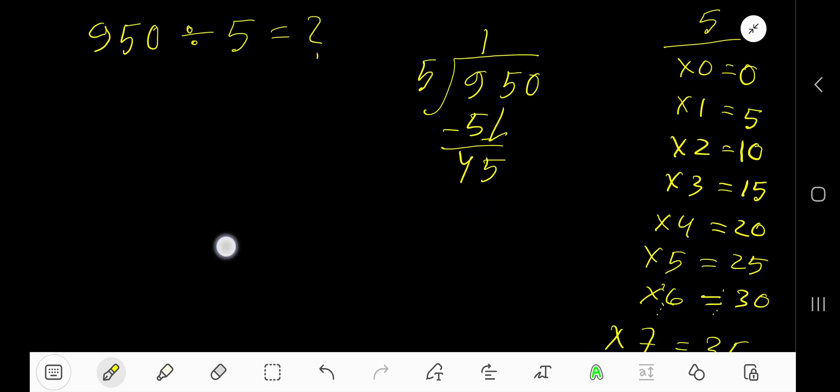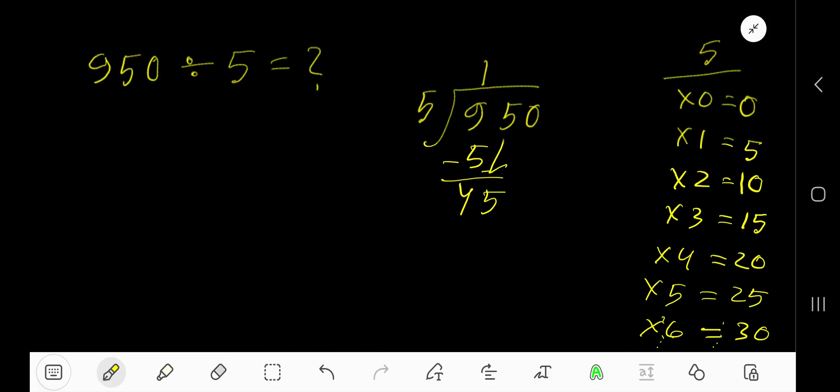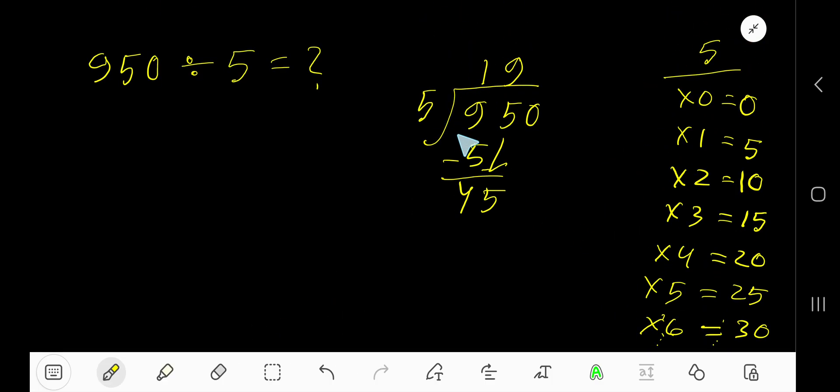5 goes into 45 how many times? Look. 5 goes into 45, 9 times. So write 9. 9 times 5, 45. Subtract 0.